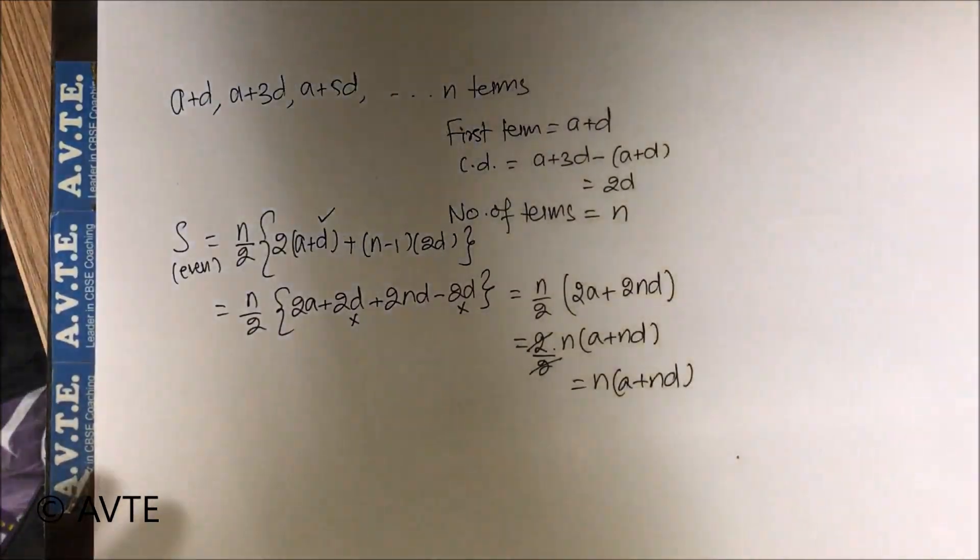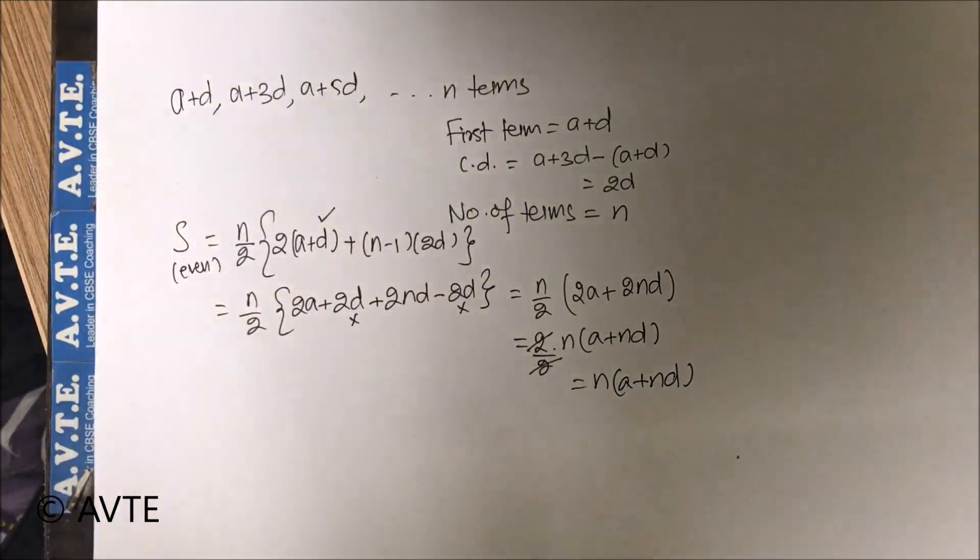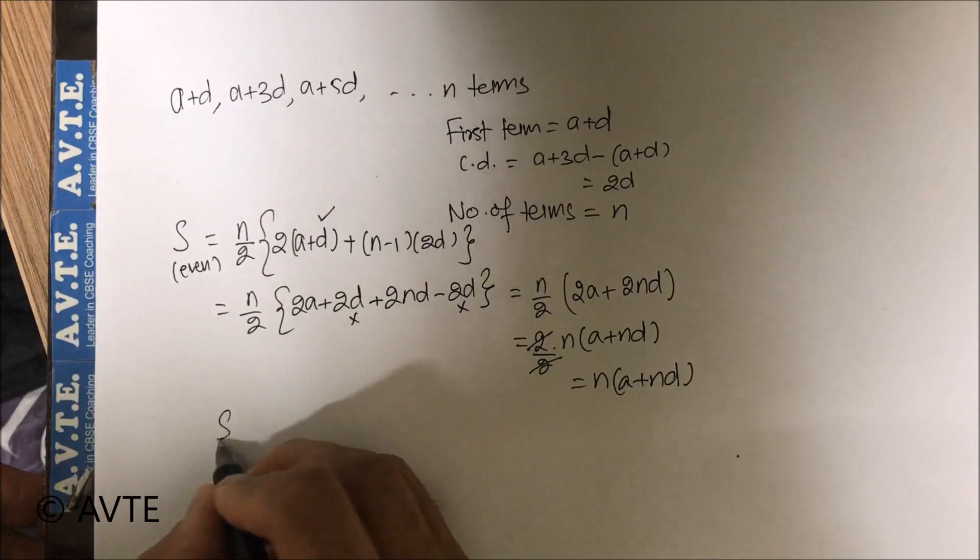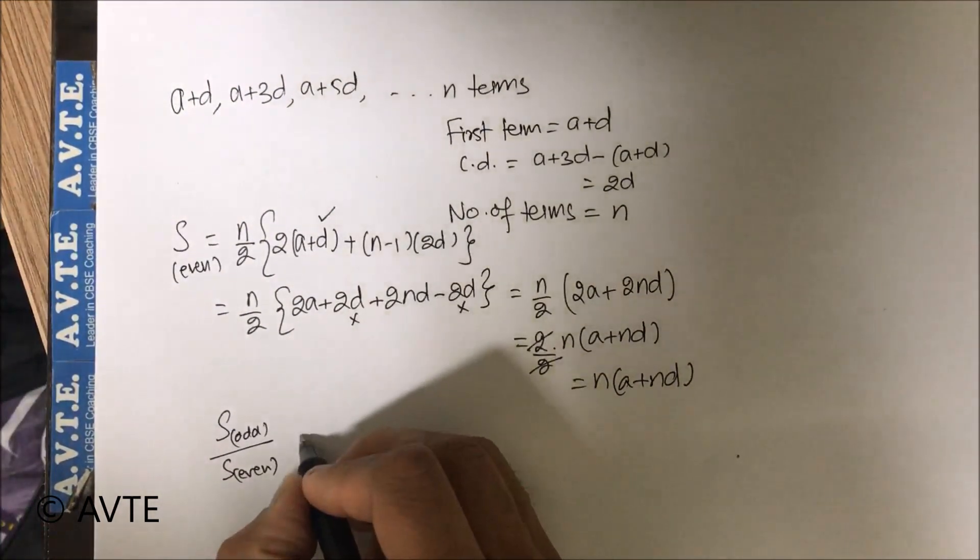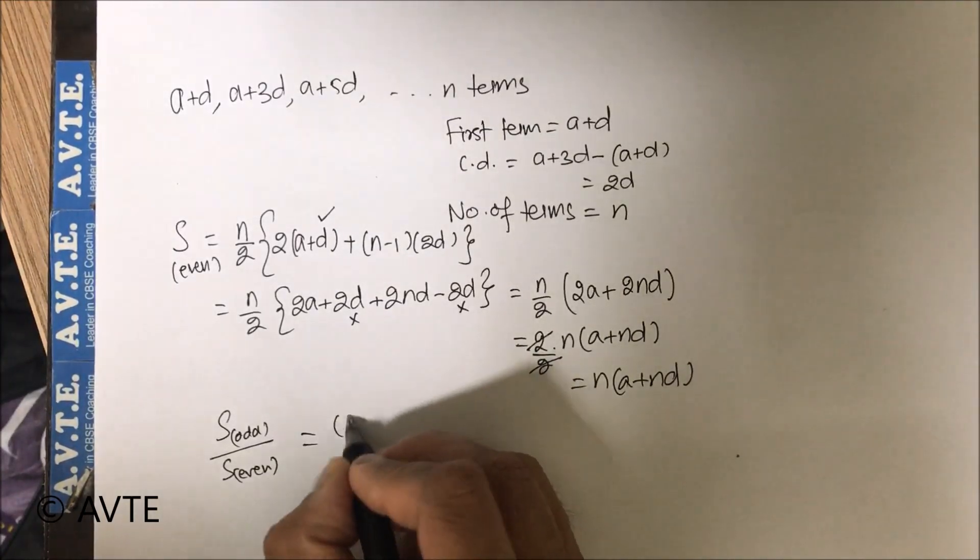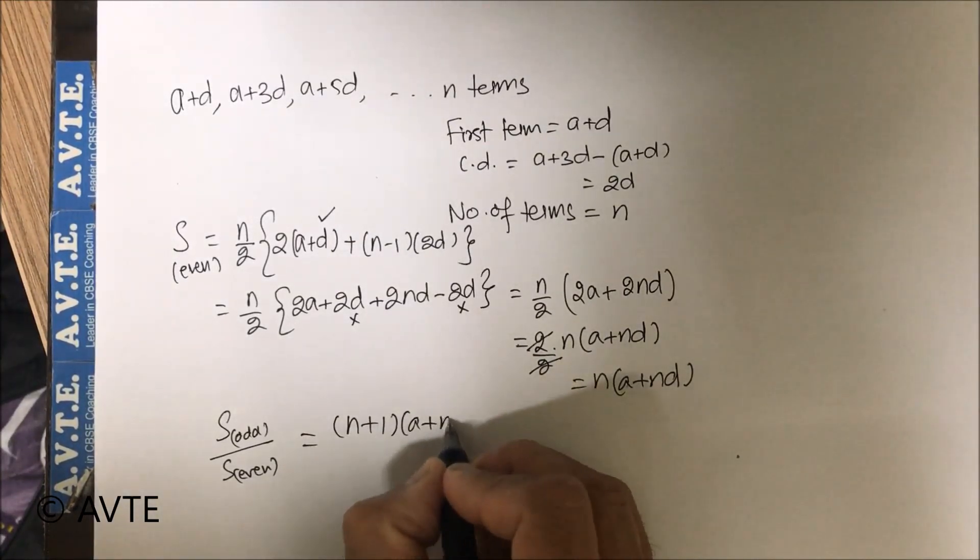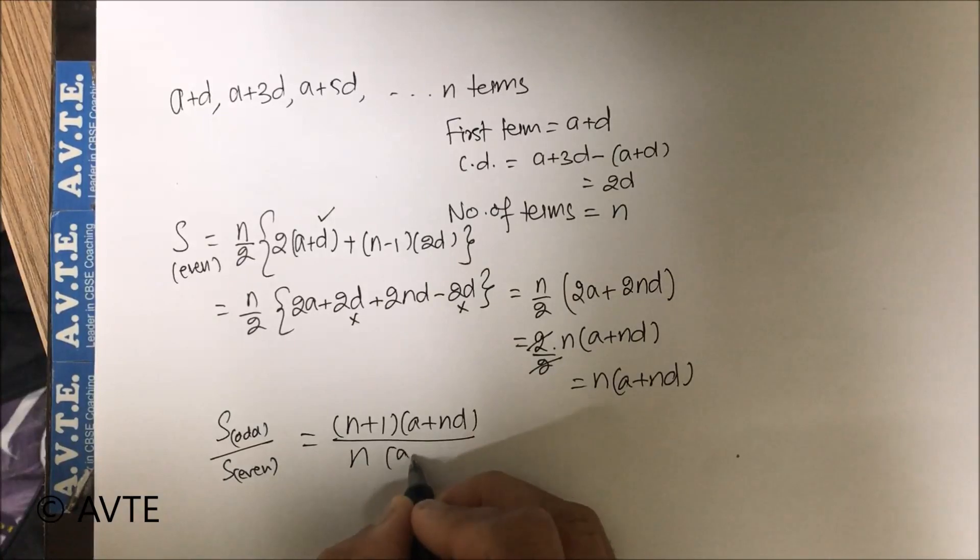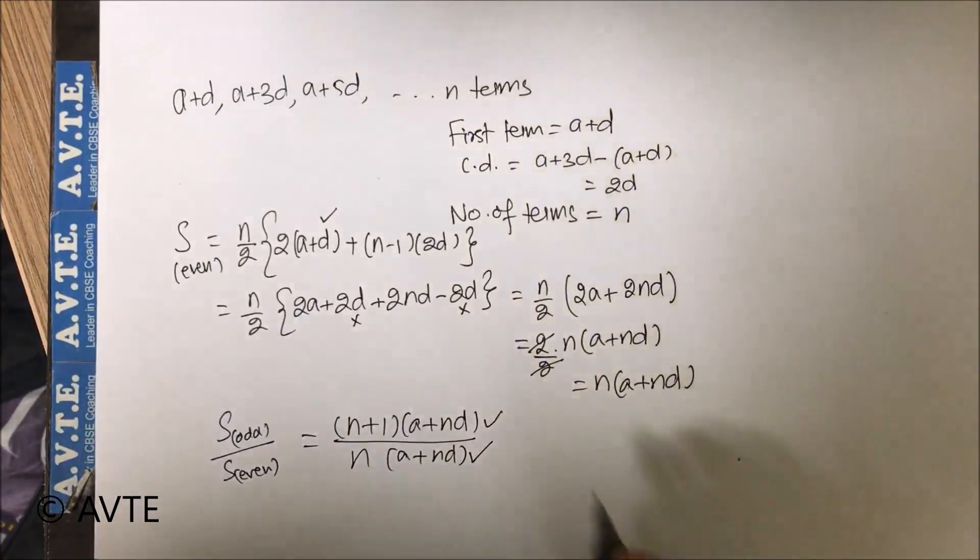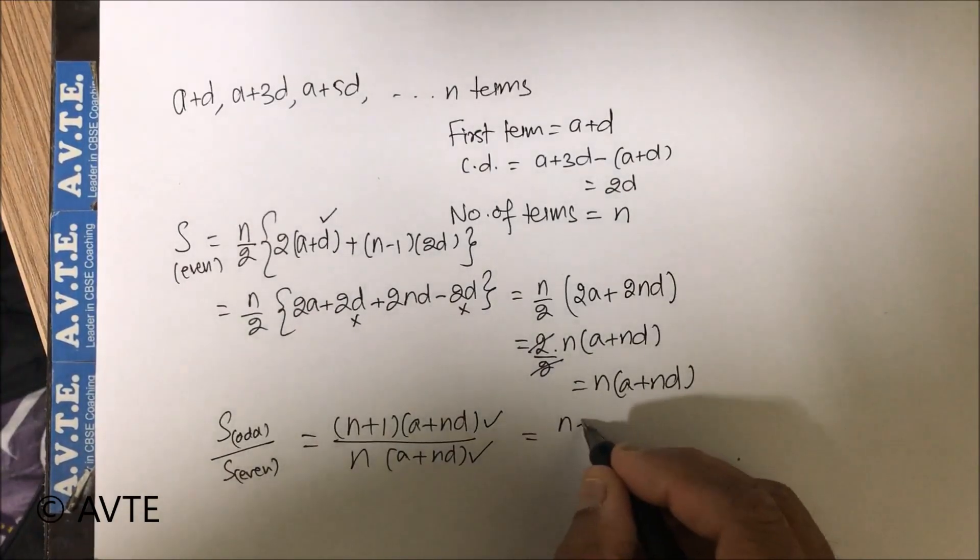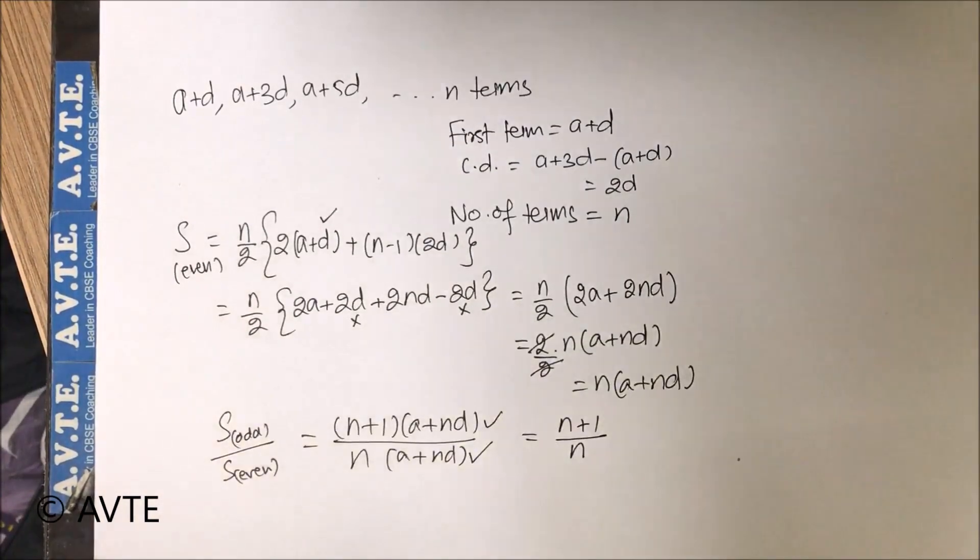Now coming on to the ratio, the ratio of odd terms to even terms, so clearly this factor is common and we can cancel that, and we are left with n plus 1 by n, which is the required answer.